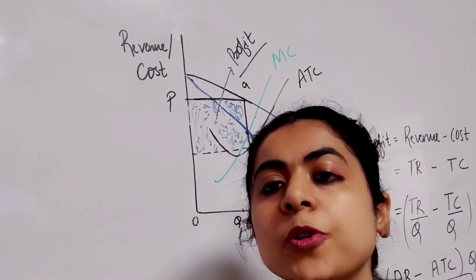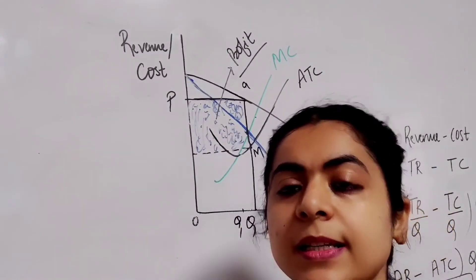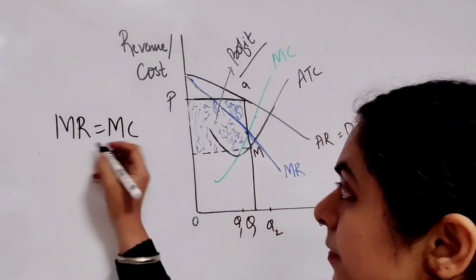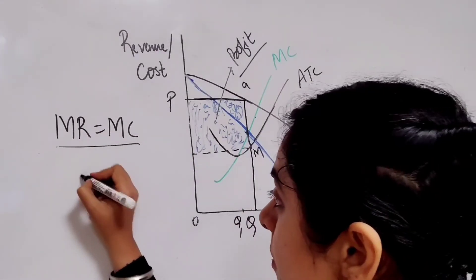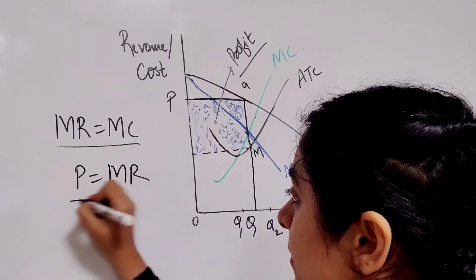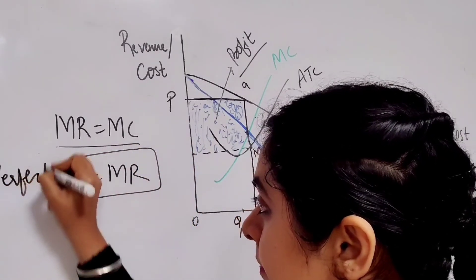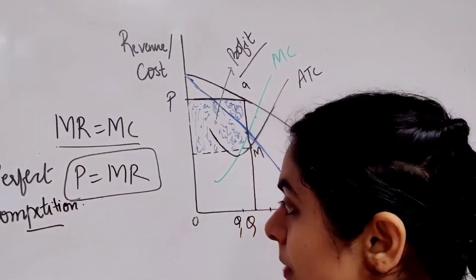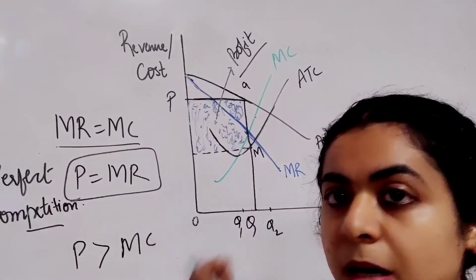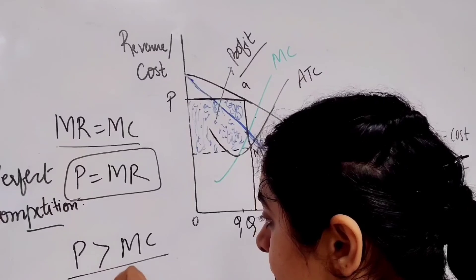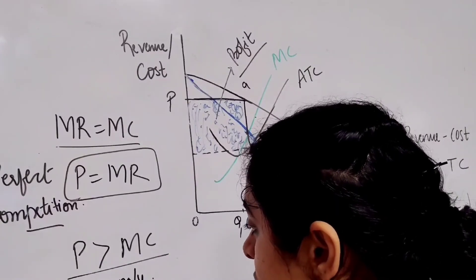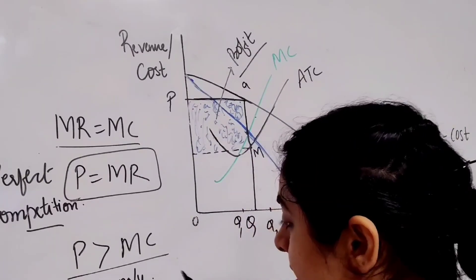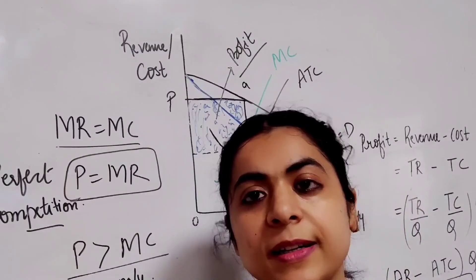The equilibrium level of output for both a monopoly and a perfectly competitive firm is determined where marginal revenue is equal to marginal cost. However, in the case of perfect competition, price is equal to marginal revenue, whereas in monopoly price is greater than marginal cost, which leads to a situation of deadweight loss. In the next video I will explain the concept of deadweight loss.